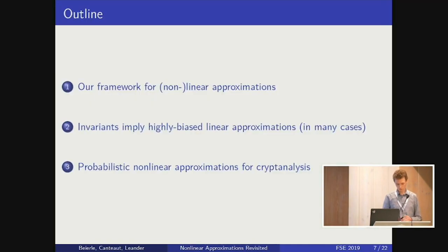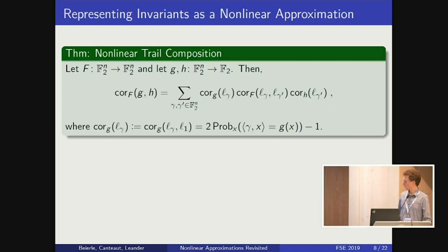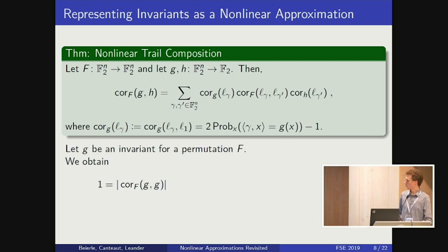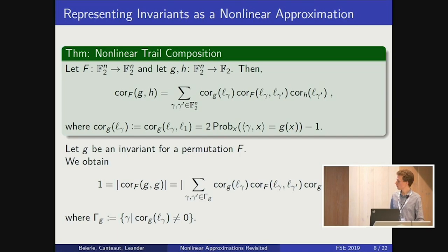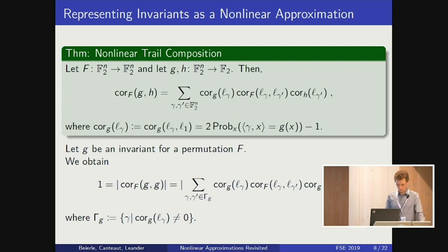For this framework, I will talk about invariants as a special case. This is our trail composition theorem. Suppose we have an invariant for a permutation f — the absolute value of the correlation over the function equals 1. You can express this correlation as a sum of linear approximations: correlations of linear approximations times correlations over g. We sum only over the masks lying in the set Gamma_g — exactly those masks such that the correlation over gamma is non-zero.